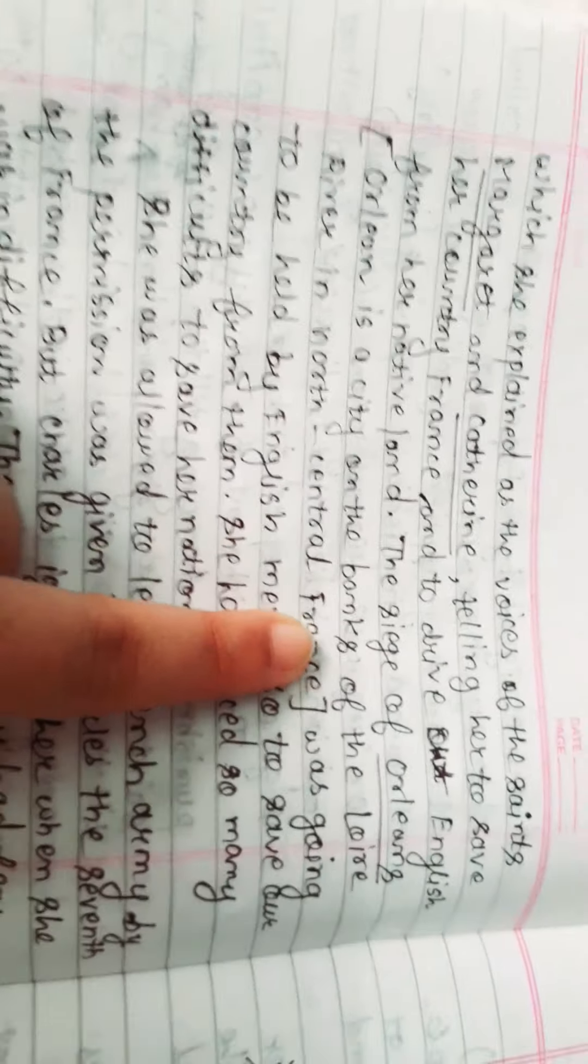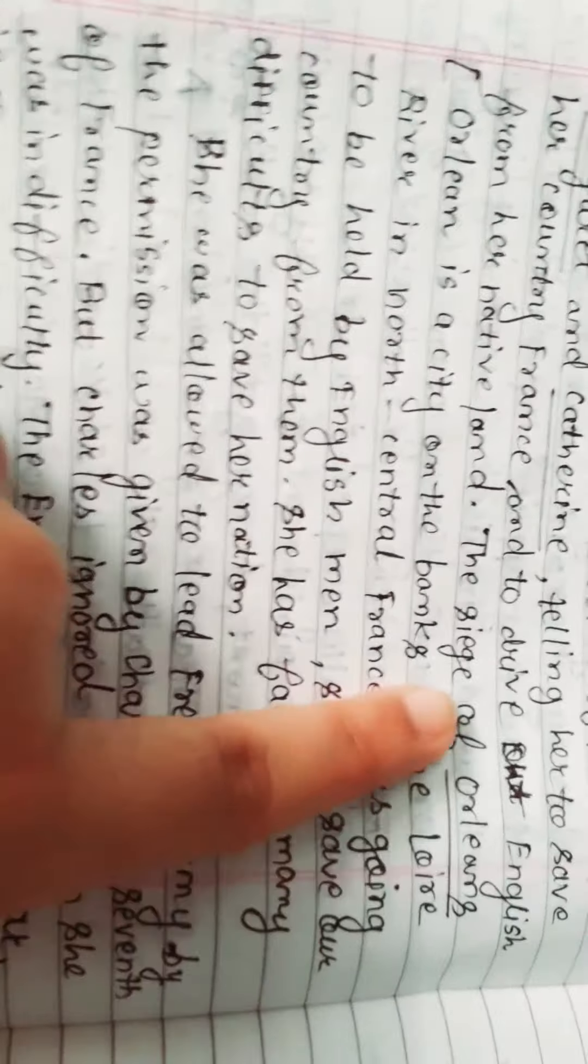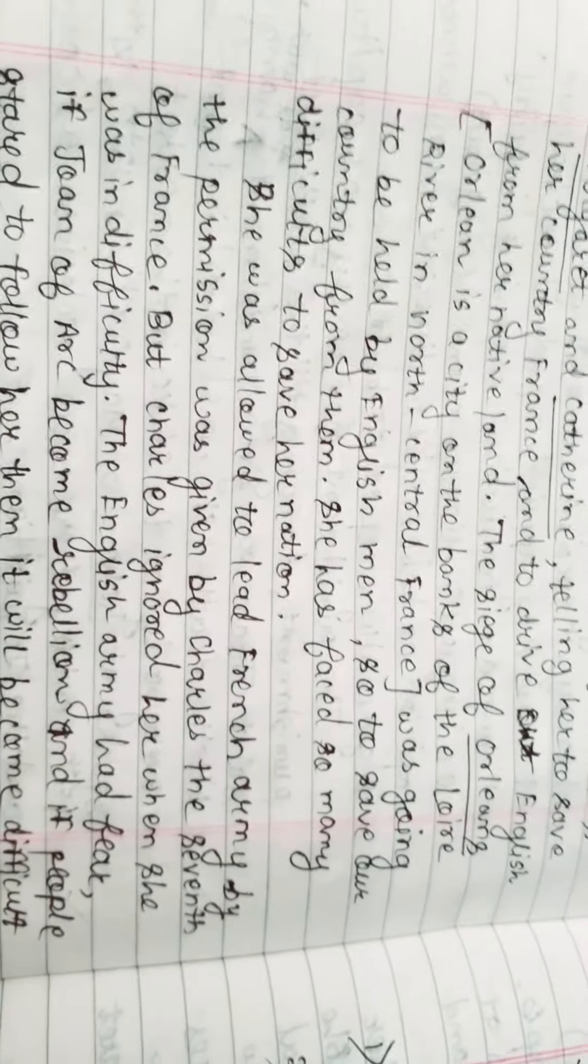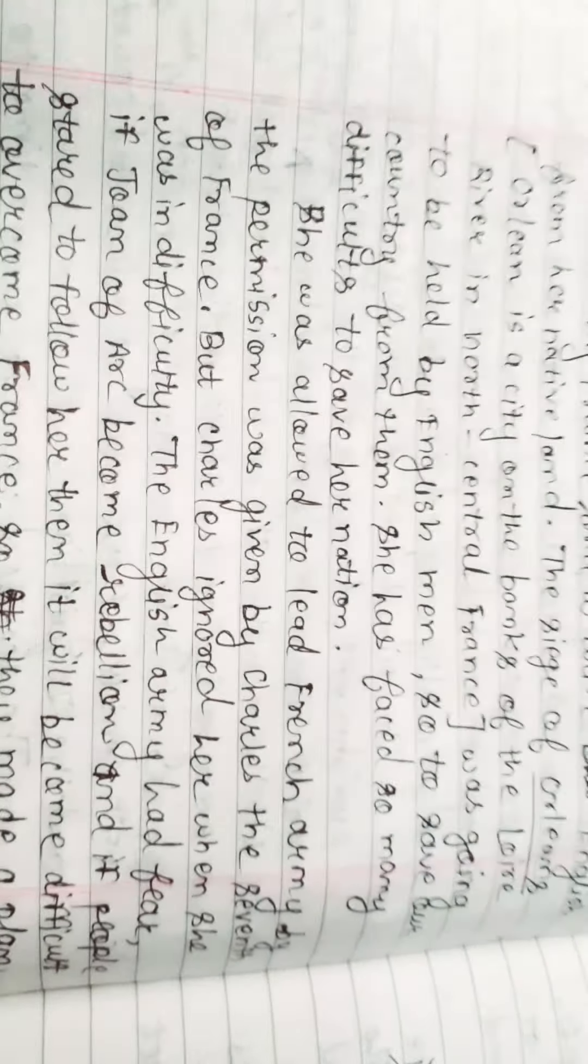Now the Siege of Orleans. Orleans is a city on the banks of Loire River in northern central France. So the Siege of Orleans was going to be held by Englishmen. To save her country from them, she faced so many difficulties to save her nation.